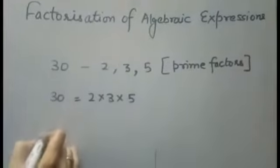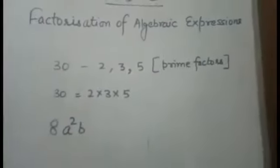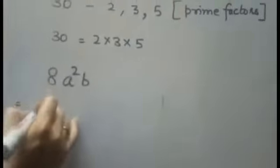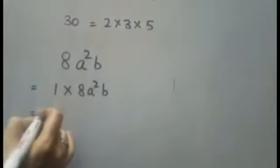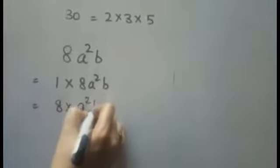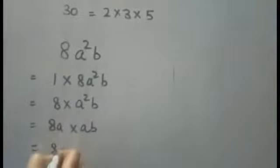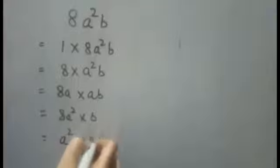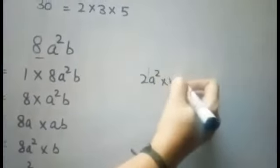I am clarifying this by taking an example: 8a squared b. This is an algebraic expression. There are many ways to write the factors of this — 1 into 8a²b, or 8 into a²b, or 8a into ab. Even factorizing 8 as 2 into 4: for example, 2a² into 4b also equals 8a²b.